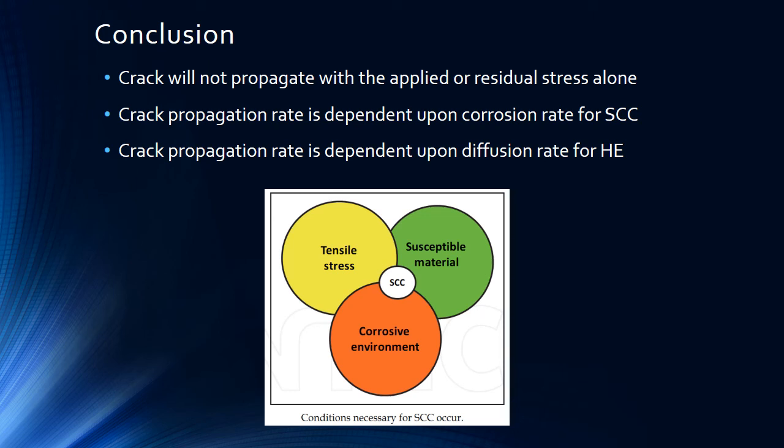The crack growth rate for stress corrosion cracking is simply dependent upon the chemistry of the corrosion process, and that is which limits it. Whereas for hydrogen embrittlement, the crack growth rate is dependent upon the diffusion rate, which is dependent upon the temperature.